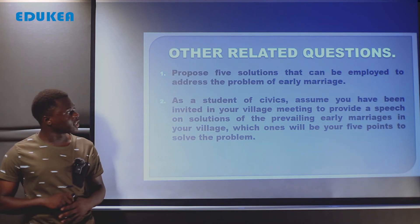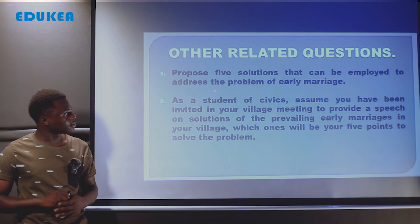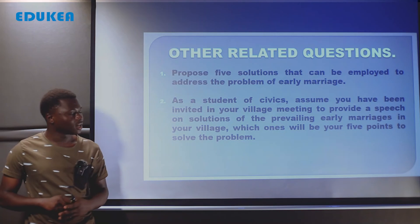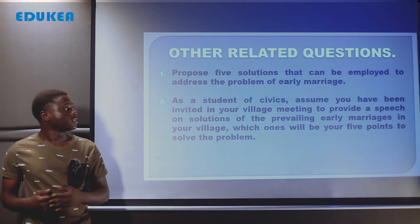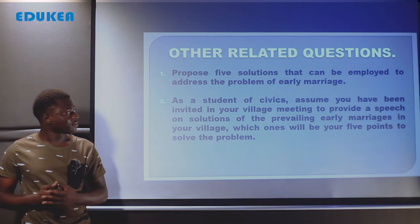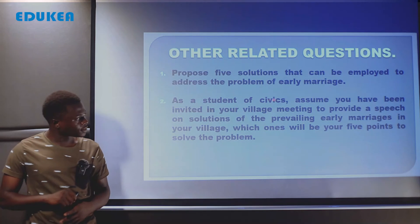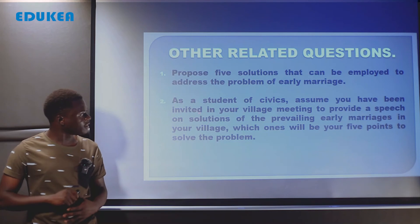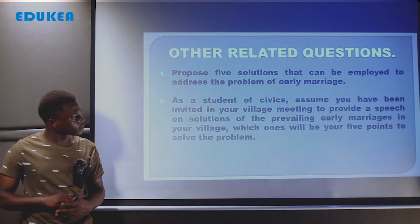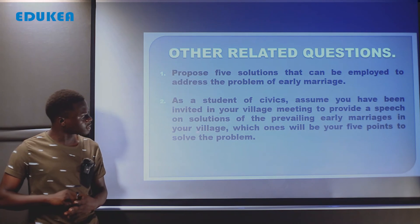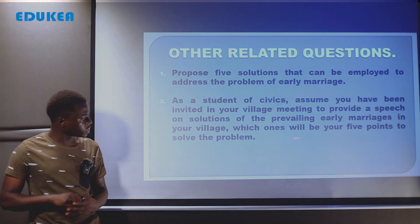We are now moving to see other related questions. Propose five solutions that can be employed to address the problem of early marriage. Also, as a student of civics, assume you have been invited to your village meeting to provide a speech on solutions to the prevailing early marriages in your village — which five points would you use to solve the problem?